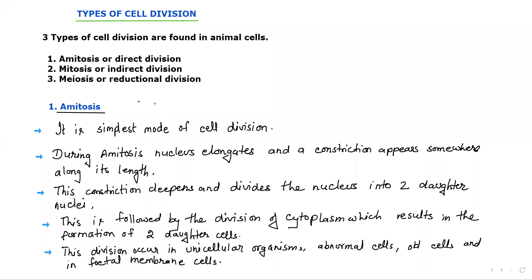We are going to discuss the types of cell division. Basically, three types of cell division are found in animal cells. First one is amitosis, also called direct division. Second is mitosis or indirect division, also called somatic cell division or equational division. Third one is meiosis or reductional division.